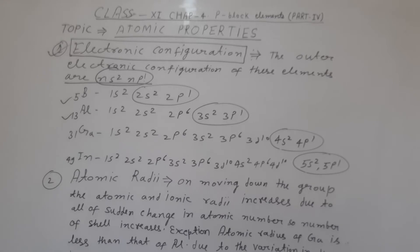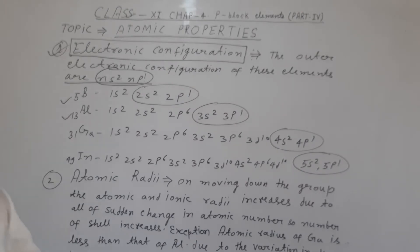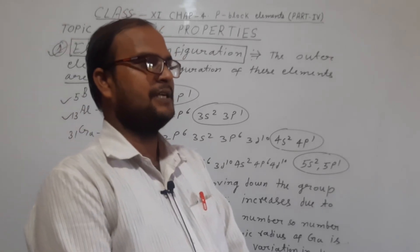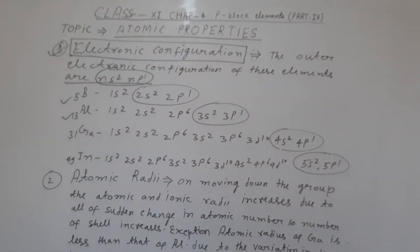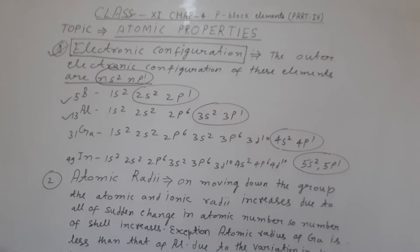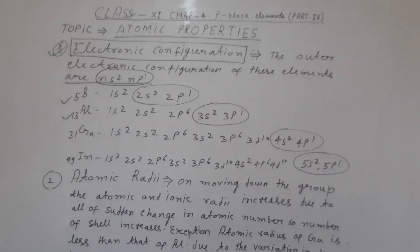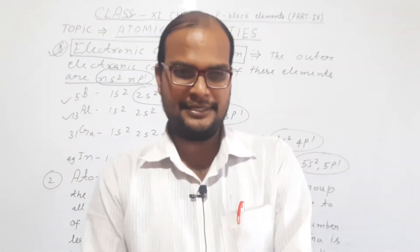Similarly, Thallium has the outer configuration 6s², 6p¹. In all these elements, we can see that the outermost electronic configuration is ns² np¹. Only the number of shells increases as atomic number increases — Boron has 2s, 2p; Aluminium has 3s, 3p; Gallium has 4s, 4p; Indium has 5s, 5p. The total valence electrons in the outermost shell is 3.